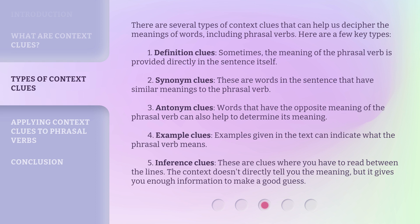4. Example clues — examples given in the text can indicate what the phrasal verb means. 5. Inference clues — these are clues where you have to read between the lines. The context doesn't directly tell you the meaning, but it gives you enough information to make a good guess.